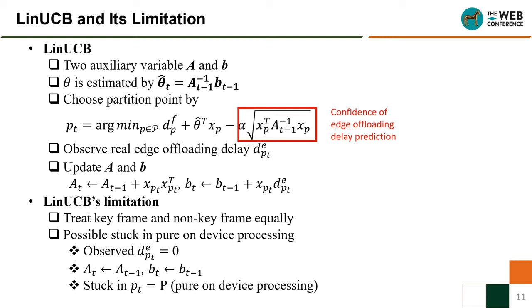However, the original LinUCB has two limitations for ANS. First, it treats keyframes and non-keyframes equally. Second, it may get stuck in pure on-device processing. This is because when LinUCB chooses pure on-device processing, the observed edge offloading delay always equals zero, so variables A and B do not update, and LinUCB will always choose pure on-device processing.